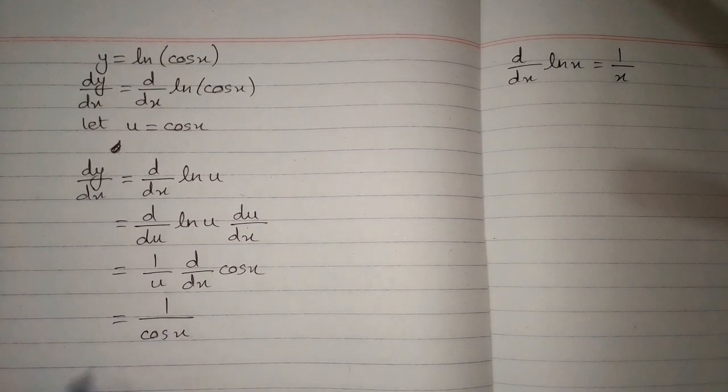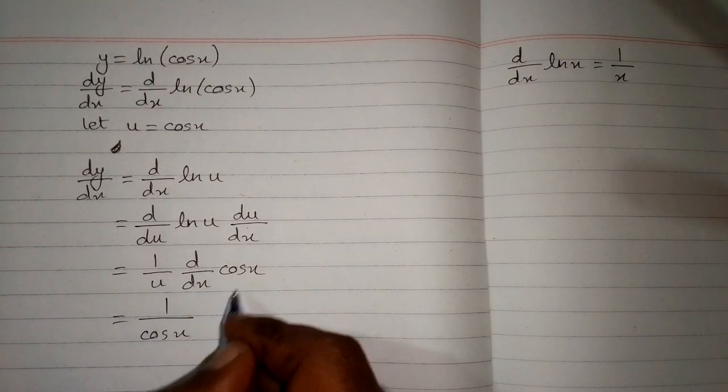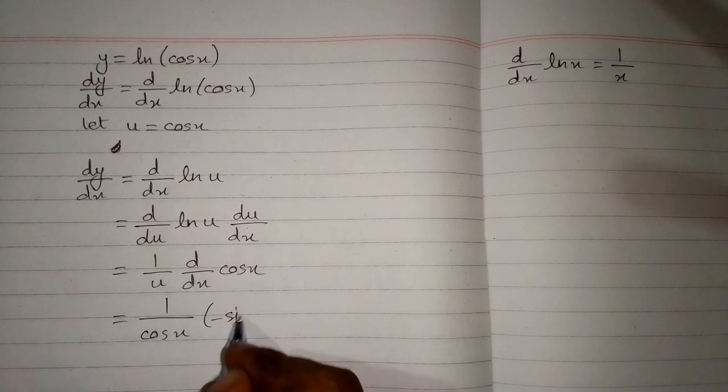So we have 1 upon cosine of x multiplied by the derivative of cosine of x which is minus sine of x.